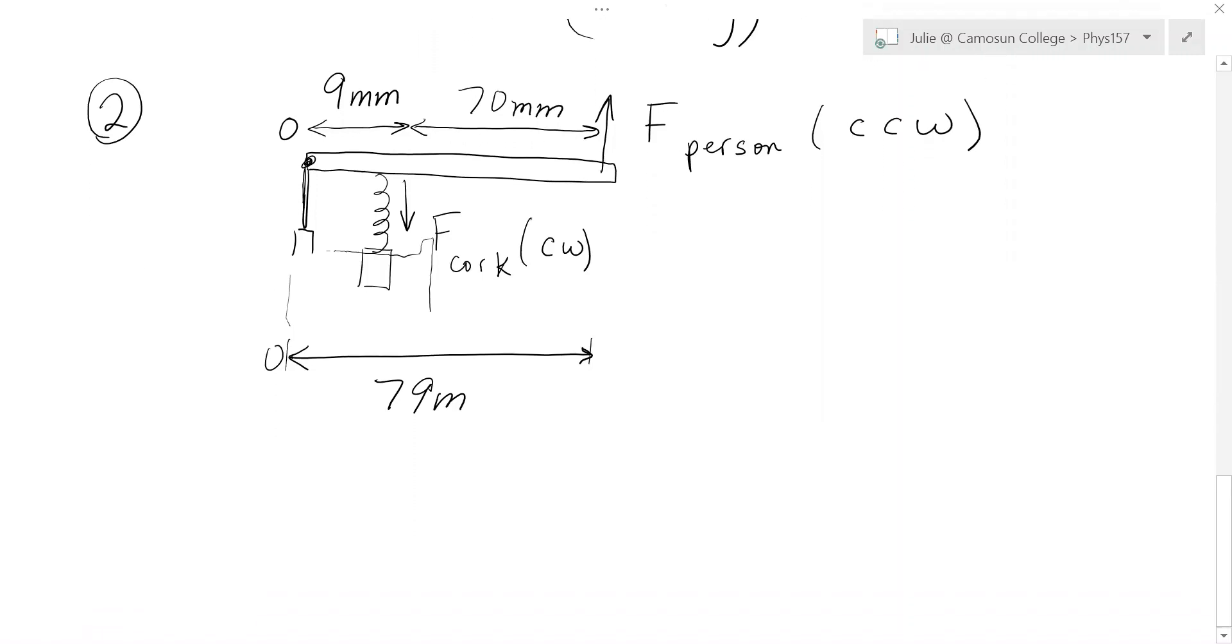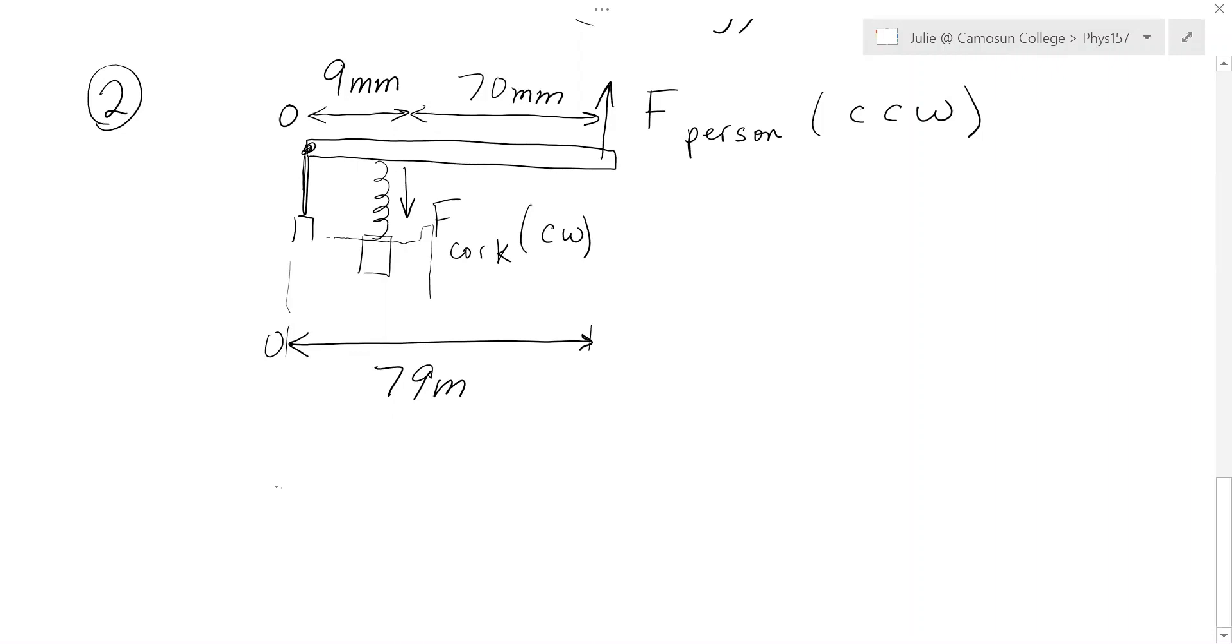So once again, clockwise torques equal counterclockwise torques. Clockwise equal counterclockwise. So nine millimeters times the force on the corkscrew due to the cork, must equal 79 times the force of the person.